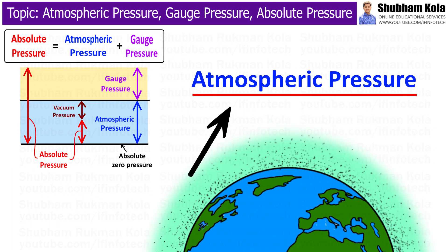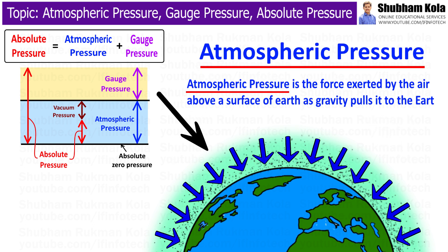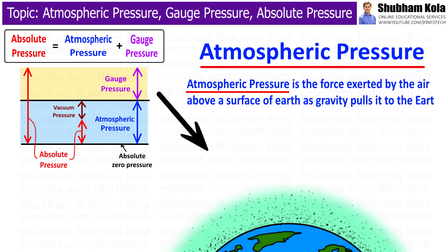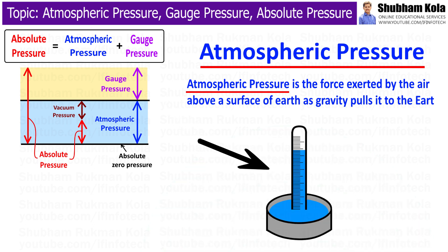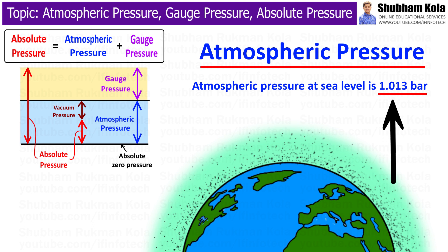Atmospheric pressure is caused by the Earth's atmosphere. It is the force exerted by the air above the surface of Earth as gravity pulls it to the Earth, and it is also known as air pressure. A barometer is commonly used to measure atmospheric pressure. The atmospheric pressure at sea level is 1.013 bar.